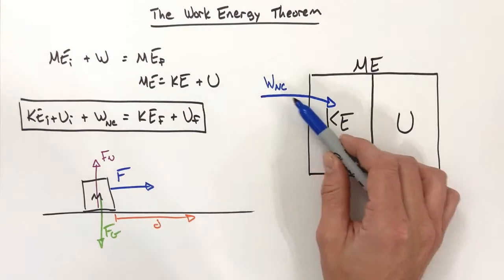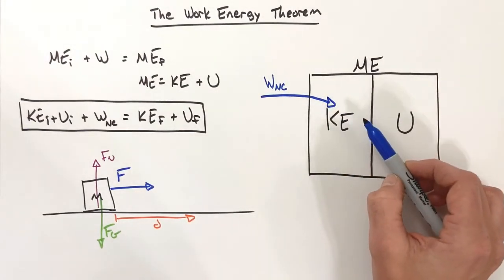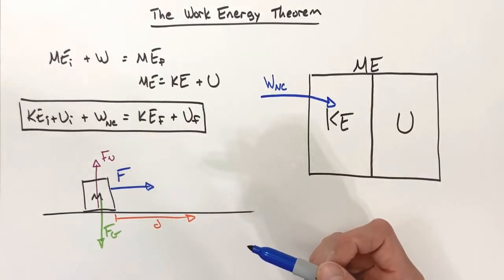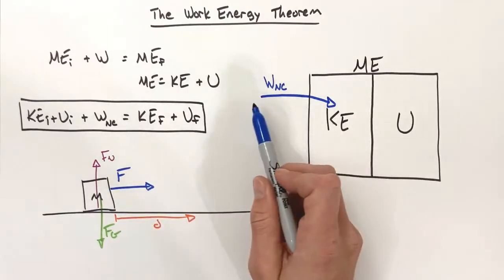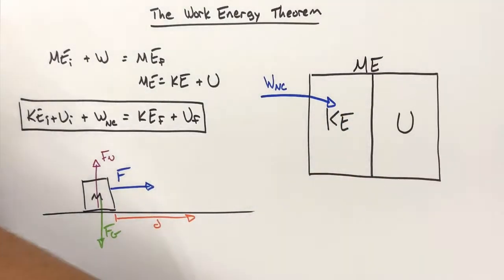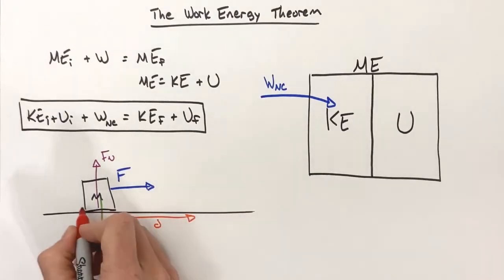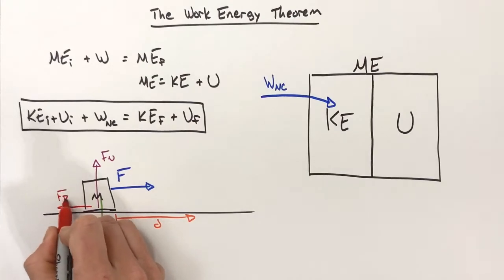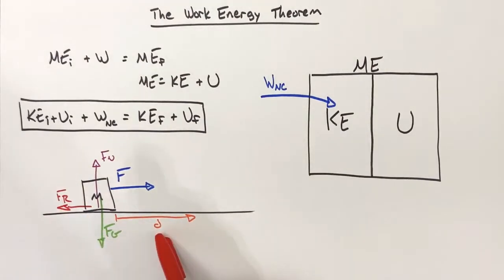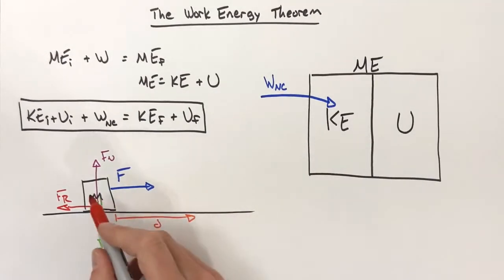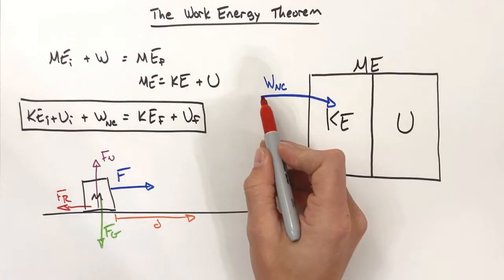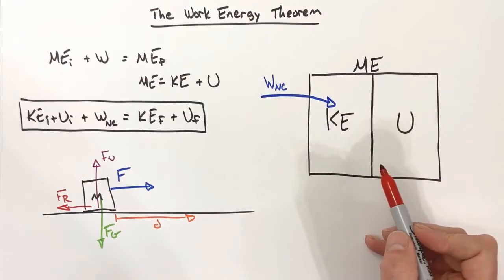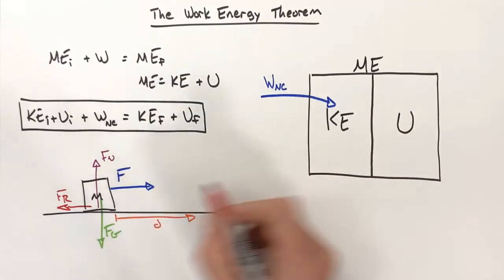Any force that changes the total mechanical energy of an object, we say that force is non-conservative. So as I push on this box I'm adding energy to the system. Now, we also often encounter friction acting on the box in the opposite direction of displacement. As I push the box and do positive work — adding energy — friction is trying to take it away.